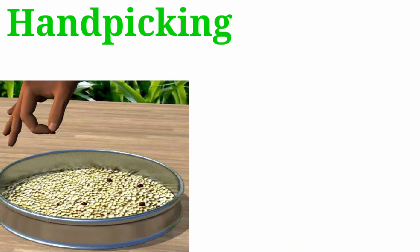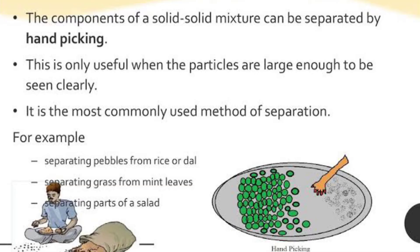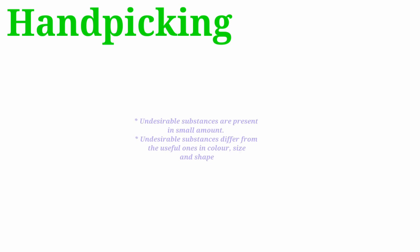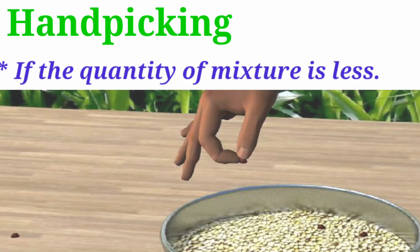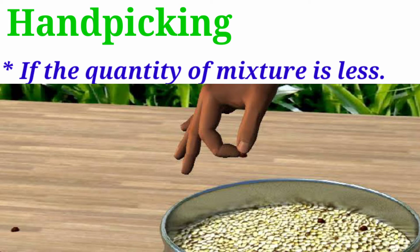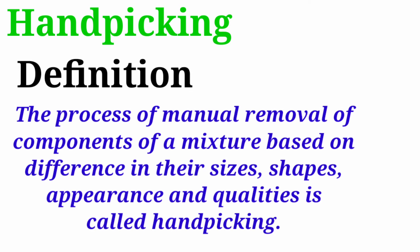This method is used only in certain specific conditions: when the undesirable substances are present in a small amount, when the undesirable substances differ from the useful ones in color, size, and shape, and when the quantity of the mixture is less. It cannot be applied with a huge amount. The process of manual removal of components of a mixture based on differences in size, shape, appearance, or qualities is called hand picking.